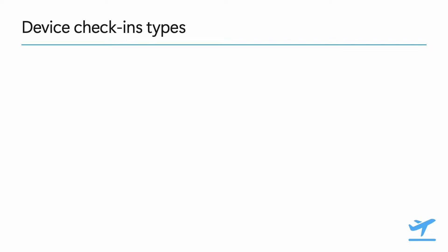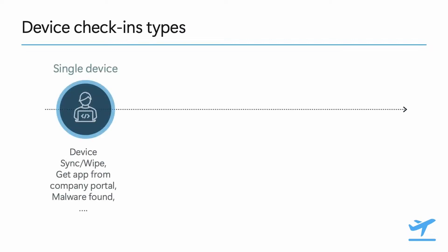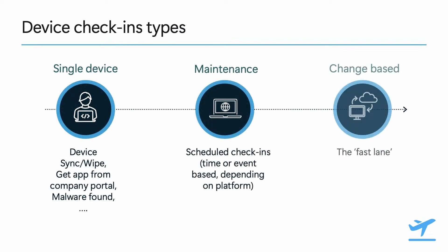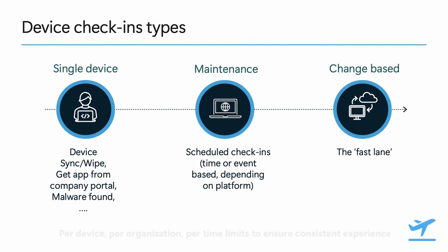I would classify device check-ins into three big buckets. Single device check-ins are actions that an admin or end user takes on a single device — for example, getting an app from the Company Portal, or a device action like a device sync, a remote wipe, or script execution.